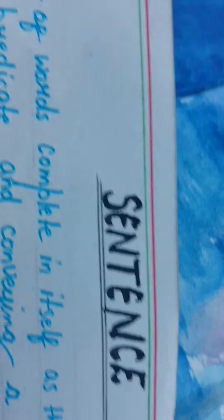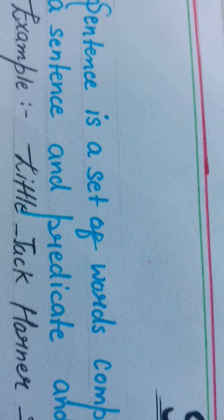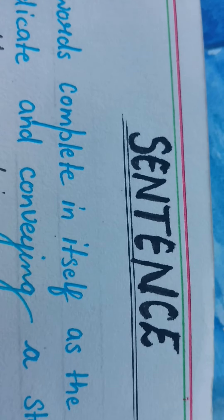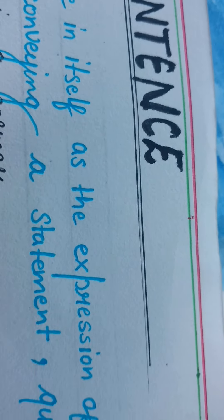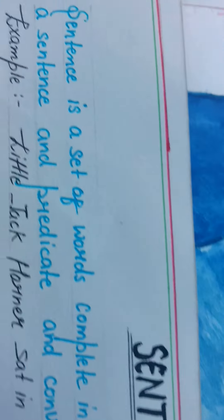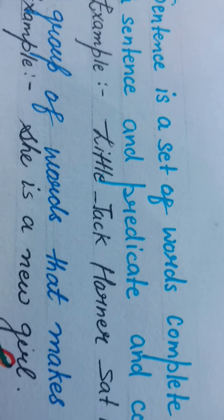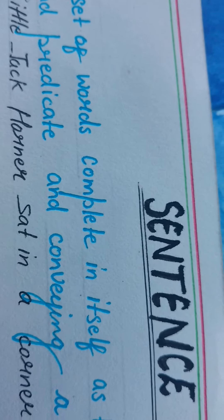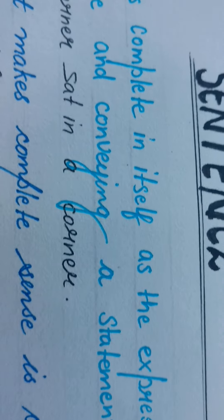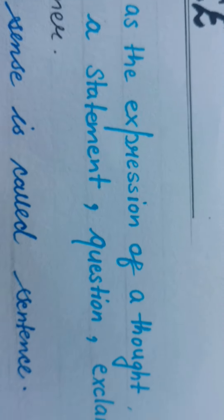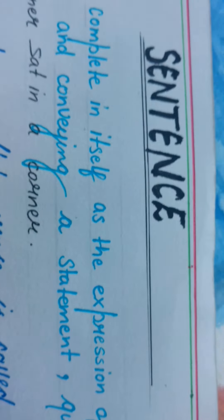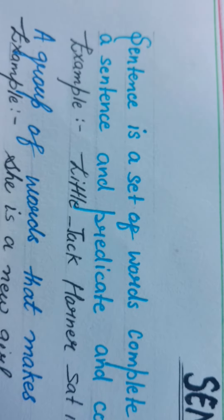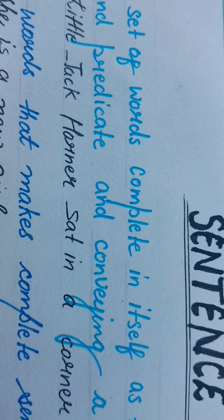For example, 'I am a good girl.' So there are three types of sentences: simple sentence, compound sentence, and complex sentence. A simple sentence is a sentence which has one subject and one predicate. It usually begins with a capital letter and ends with a full stop, a question mark, or an exclamation mark. For example, 'You are a good boy.'